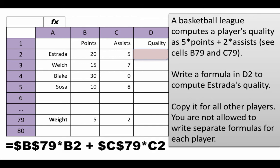So, obviously the formula is going to be $B$79, which is where the five is, times B2, which is the number of points, plus $C$79, which is where this two is, times C2. So, if you put that formula here and then you copy it for all others, then the B2 and C2 will change appropriately, depending on the row. But the $B$79, $C$79 will stay unchanged because they are absolute.